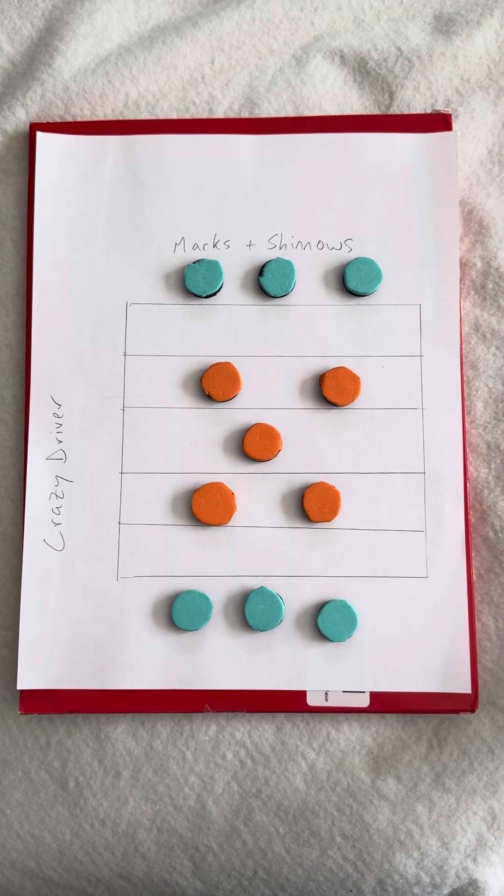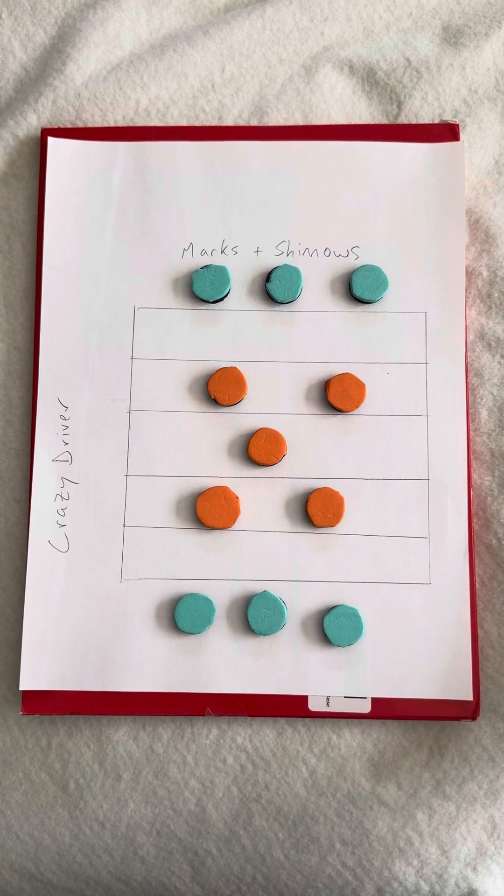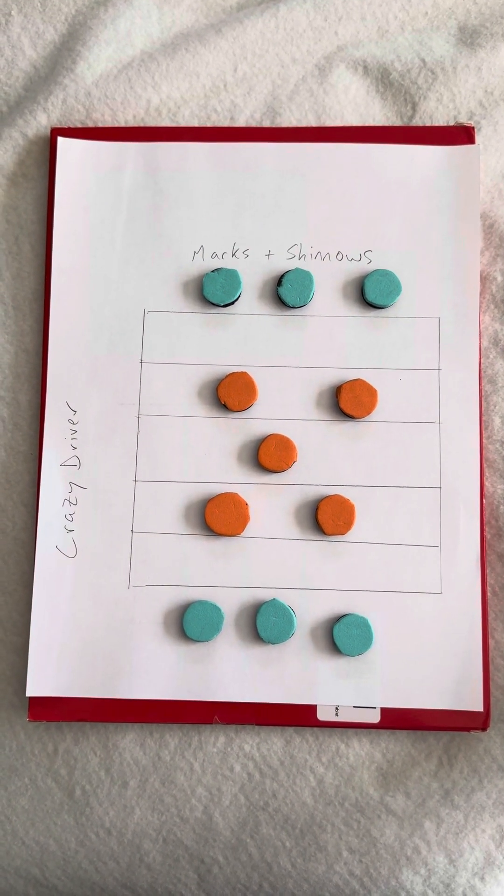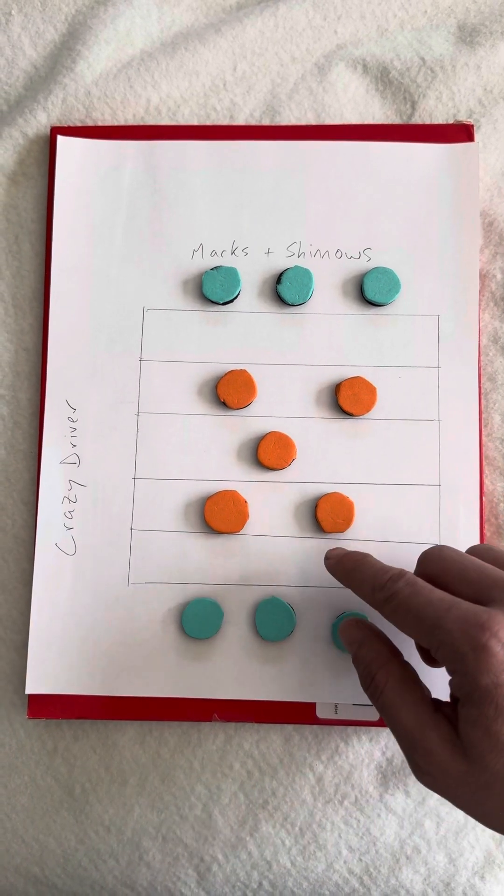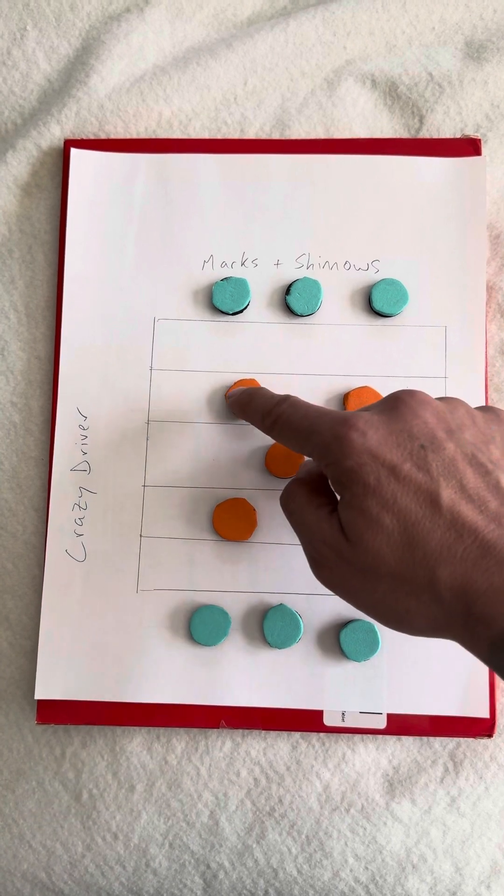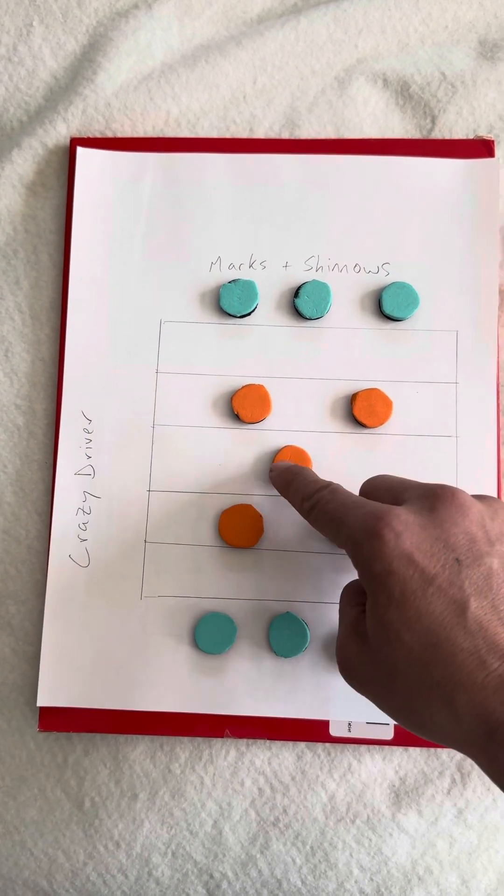Sharks and minnows, traditional game. You have one player who starts, and they run across and the shark tries to tag them. Basically the same thing, and there's a couple of ways that you can use this. You have your lines or your lanes marked out, and each of your marks occupies one of those lanes.